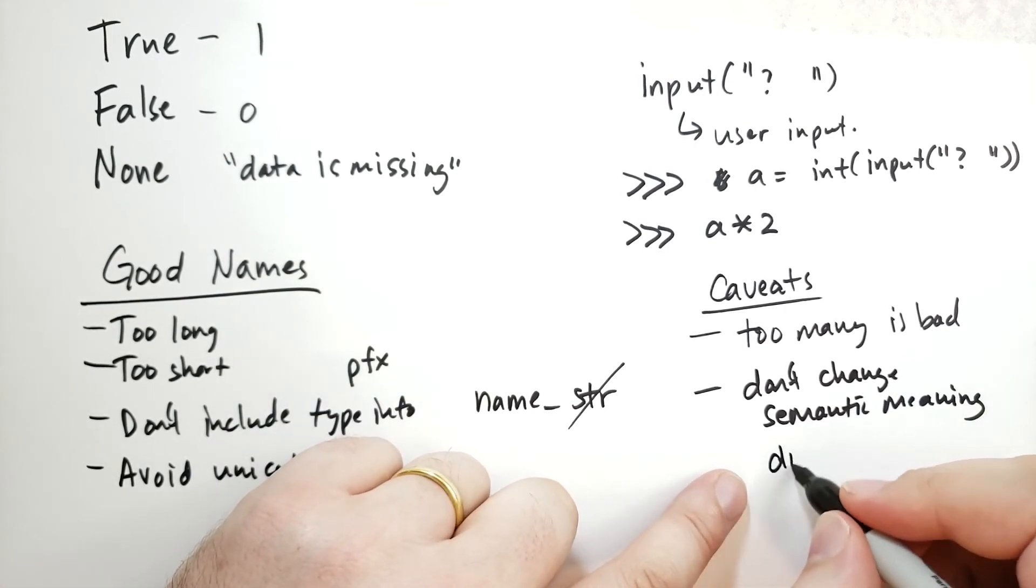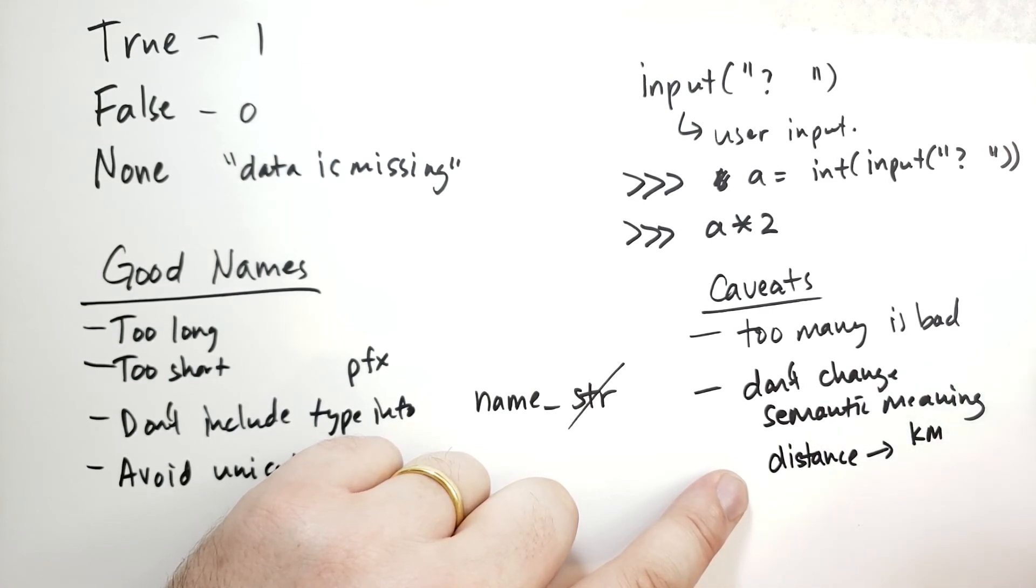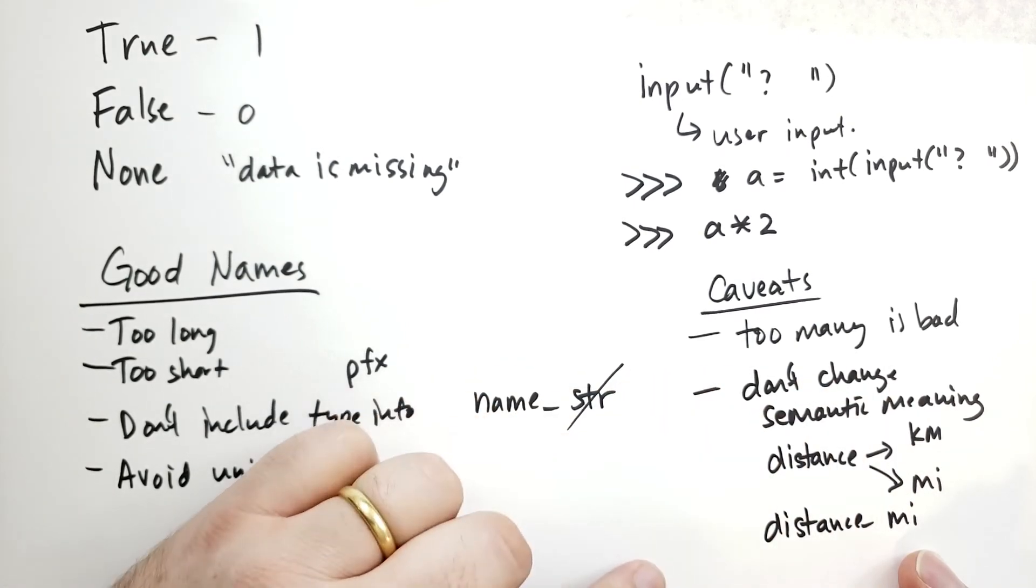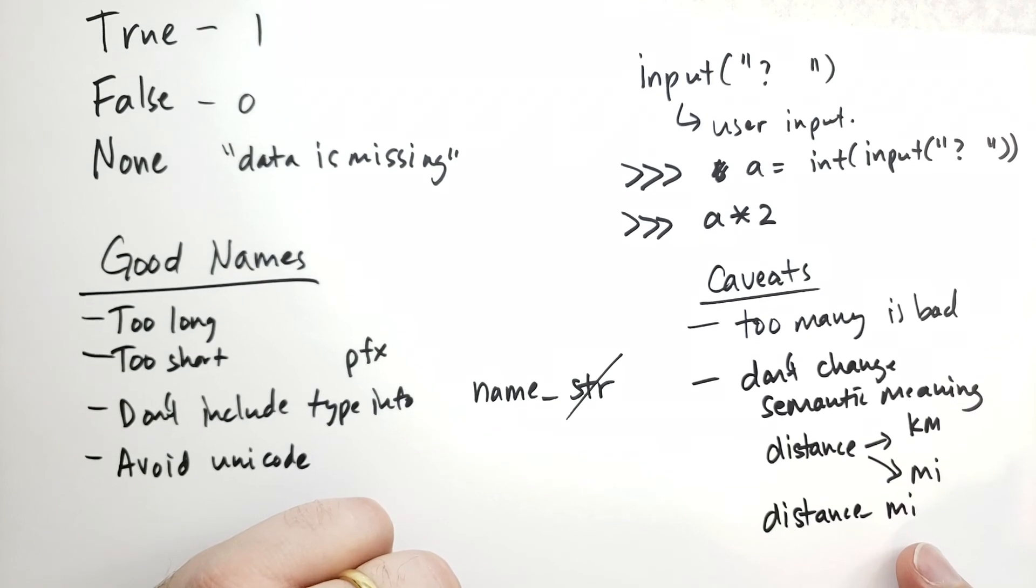For instance, if you have a variable called distance, and in one part of the program, you think of the distance in kilometers, and in another part of the program, you're thinking of it in miles, that's going to cause an issue. So, in this case, if there's a specific unit attached to the variable, you might just want to attach that to the name. And this is different than attaching the type, because this is the units of the variable, and so it'll help you remember what units the variable is. So, don't change the semantic meaning of a variable throughout its life cycle.